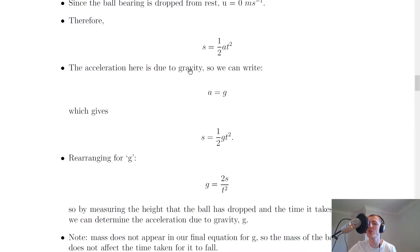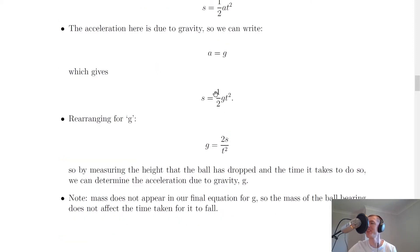And because the acceleration here is due to gravity, then we can write that A is equal to G because you might remember that acceleration due to gravity and gravitational field strength are actually equivalent quantities. So replacing the A with G now, we have S equals a half G T squared.